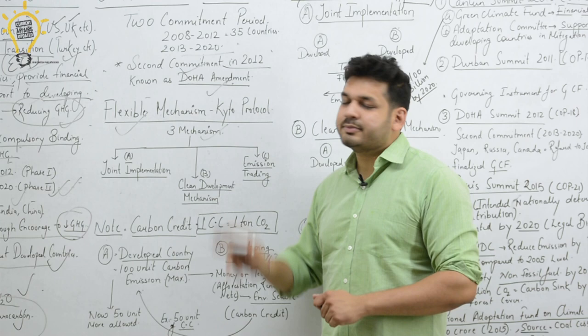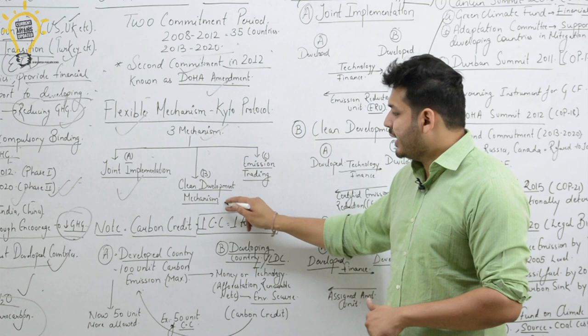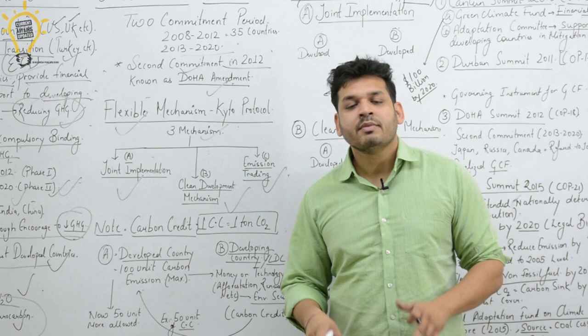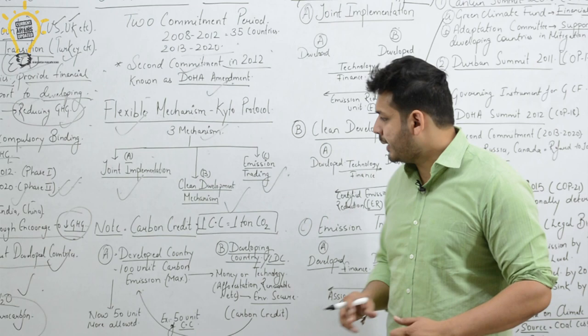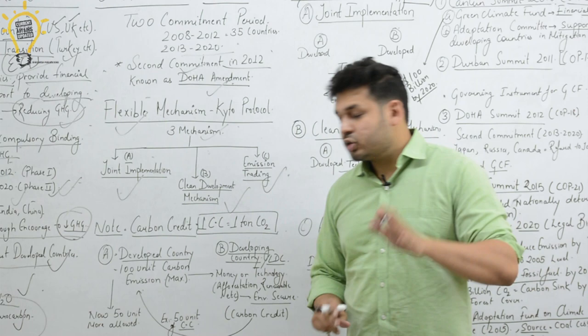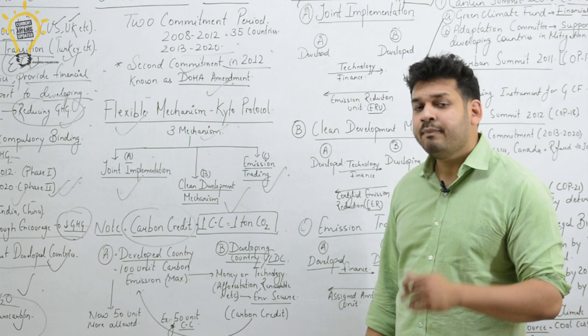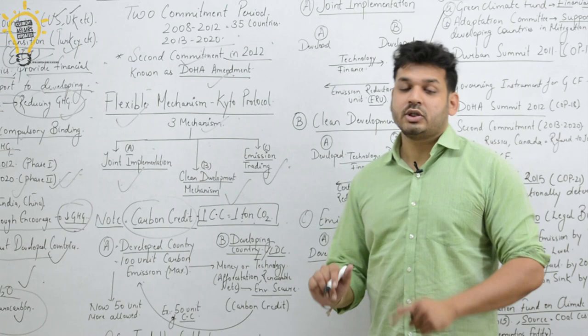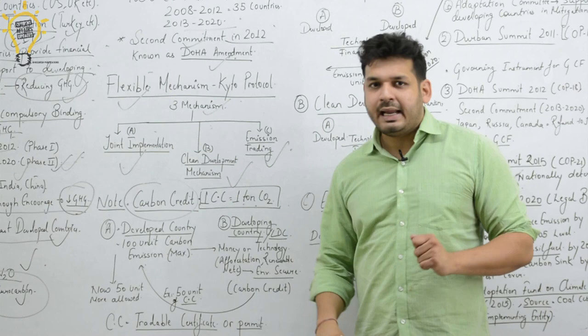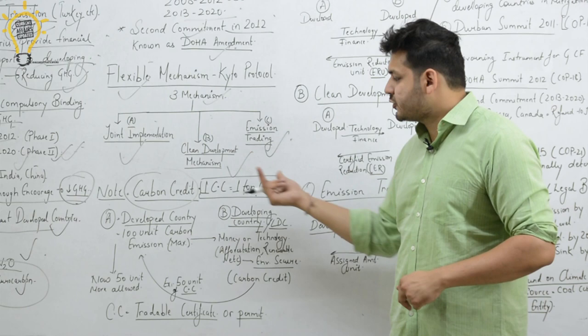The three flexible mechanisms are: first, Joint Implementation; second, Clean Development Mechanism (CDM); and third, Emissions Trading. Before explaining these, understand carbon credits. One carbon credit equals one ton of CO2. This is a very important concept.